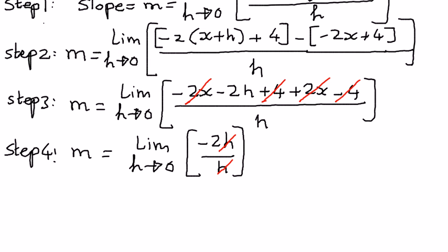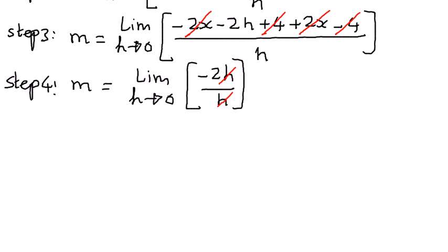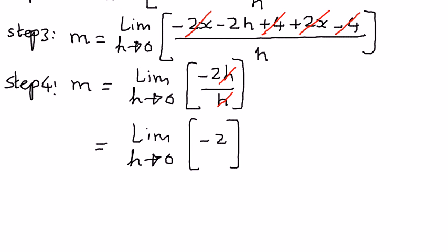This simplifies to the limit as h approaches 0, we have negative 2 there. And when we simplify this, the limit of a constant number is going to be the constant number itself. Therefore, the value here is equal to negative 2.